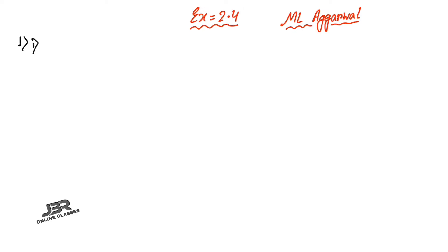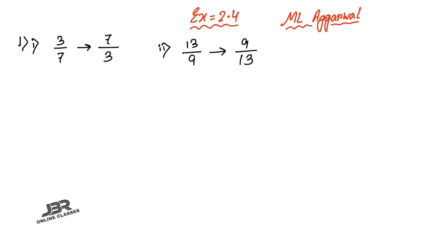Number 1: find the reciprocal of each of the following. It's very easy to find the reciprocal of a fraction. Here 3 is the numerator, so it will be the denominator for the reciprocal, and 7 is the denominator so it will be the numerator. To find the reciprocal of a fraction, just change the numerator into denominator and denominator into numerator. Number 2 is 13 by 9, so the reciprocal is 9 by 13. The last one is 8, which means 8 by 1, so the reciprocal equals 1 by 8.